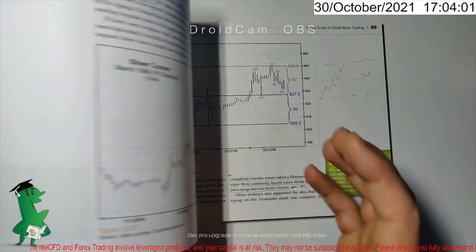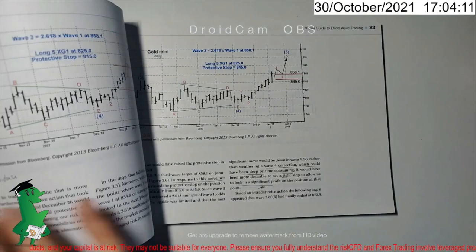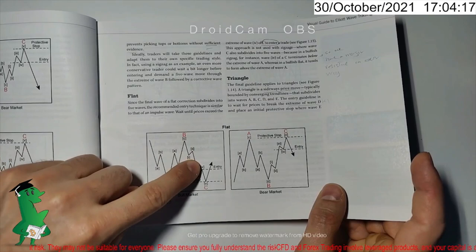The book goes through different structures—for example, a zigzag and a flat setup using wave principle. He goes through triangles, different structures.